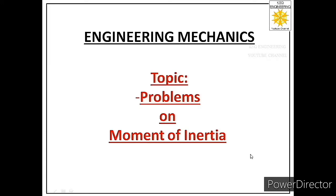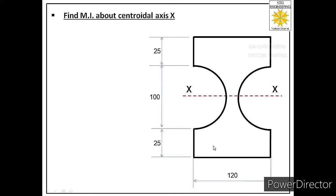Welcome students. Today we will solve the fourth numerical on moment of inertia, so let us start the lecture. We are given one composite area and we are asked to find its moment of inertia about the centroidal x-axis marked here. We need to find the moment of inertia about this axis, and it is a centroidal axis because it passes through the centroid of this composite area.